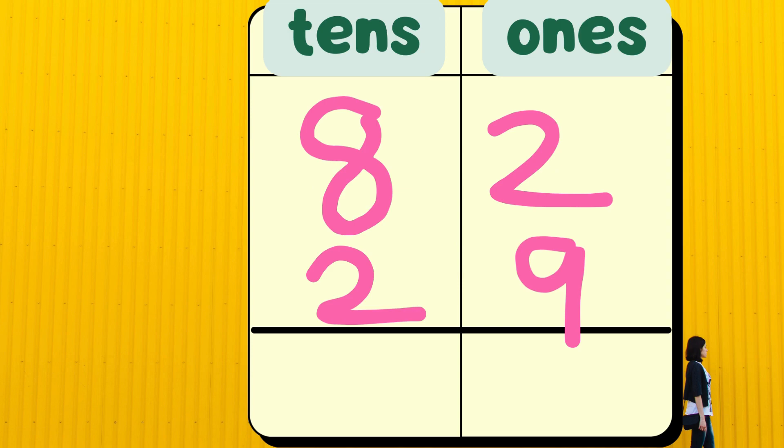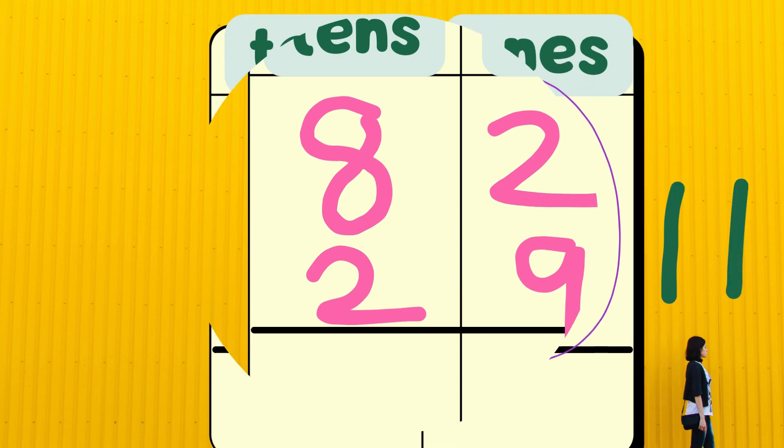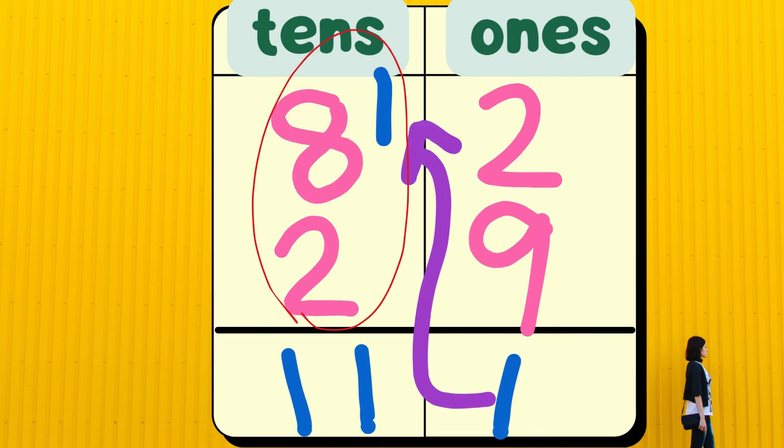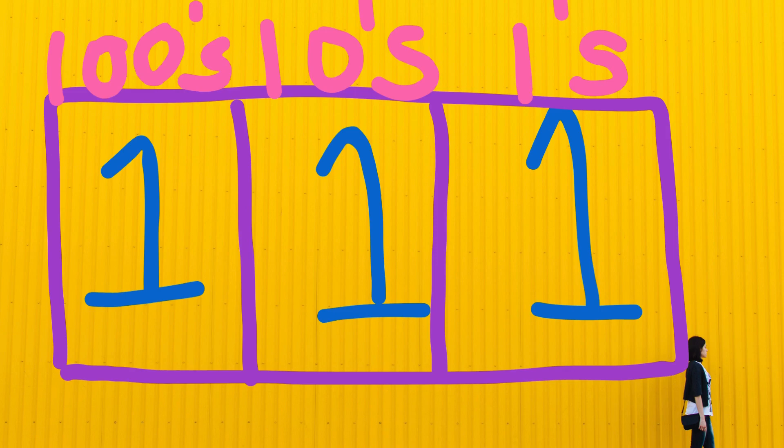Let's look at the last example. We will add 82 and 29. Let's add the 1s. 9 plus 2 gives me 11. 11 has 1 10 and 1 1. I am moving 1 10 to the 10s place and keeping the 1 in 1s place. When we add the 10s, that is, 8 plus 2 plus 1, we get 11.